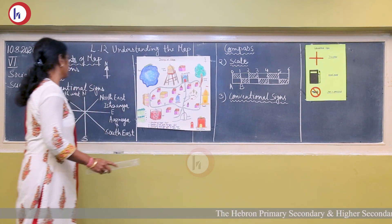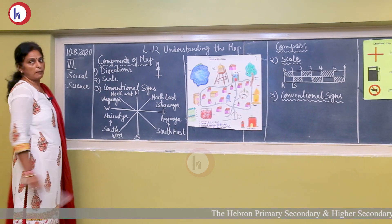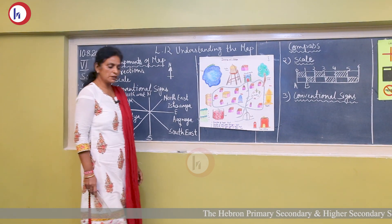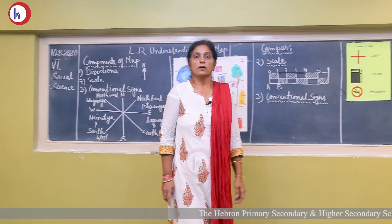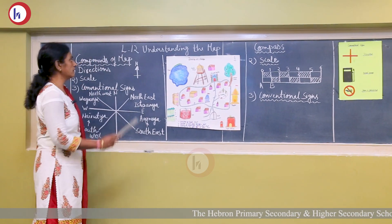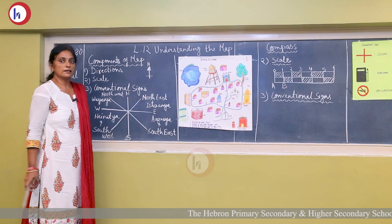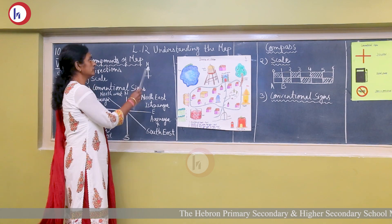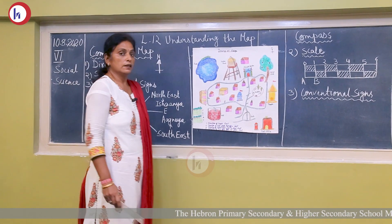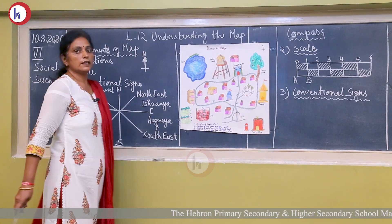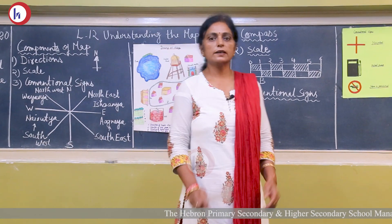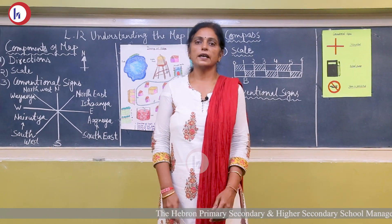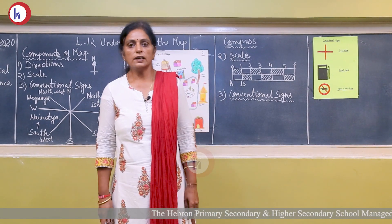Now let's start our new topic: components of map. The first component is direction. What is direction? When you observe a map, on the top of the map you see one sign. That sign is represented by an arrow and on the top of the arrow, N is written. This arrow sign indicates the north direction. If you understand the north direction, you can easily decide the rest of the directions.